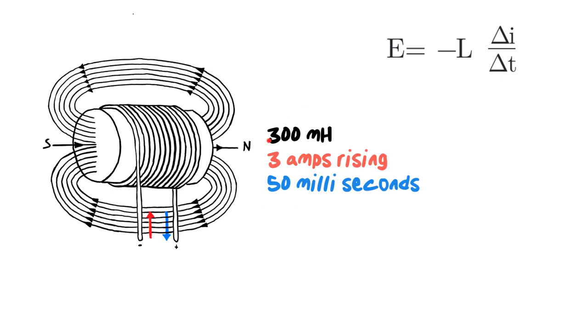So what we're going to do is we're going to take these numbers here and we're going to plug them up into our formula. We change the 300 mH into Henrys. That's why I have a 0.3. Three amps rising. That's a positive. We're going from a zero up. So that will be a positive three. And we convert the milliseconds, 50 milliseconds into seconds, which is 0.05. Then we just plunk that into the calculator. Three divided by 0.05 times 0.3 negative gives us our answer.